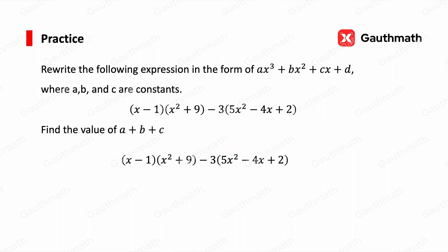Let's do one practice: write the following expression in the form ax³ + bx² + cx + d, where a, b, c are constants, then find the value of a + b + c. We apply the distributive property. For the first bracket: x times x² = x³, x times 9 = 9x, minus 1 times x² = −x², and minus 1 times 9 = −9.